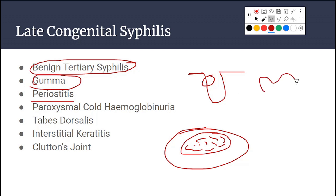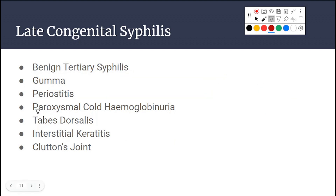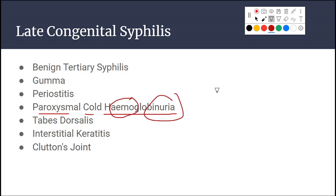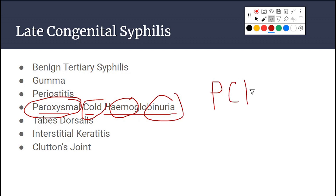Paroxysmal cold hemoglobinuria is another feature. Hemoglobinuria means presence of hemoglobin in urine; paroxysmal means sudden. So this is the sudden appearance of hemoglobin in urine that occurs only in cold temperatures — hence the full name: paroxysmal cold hemoglobinuria.